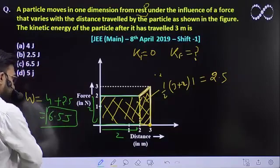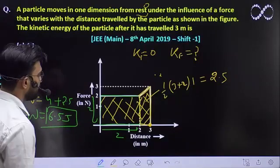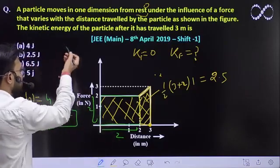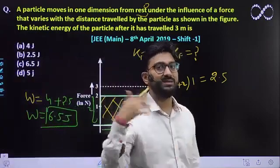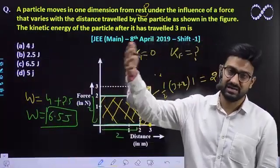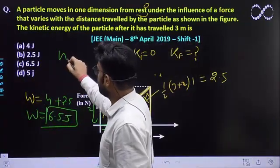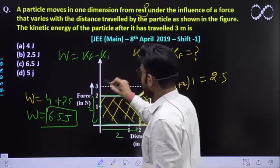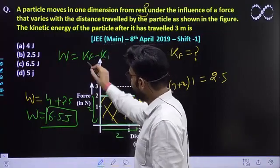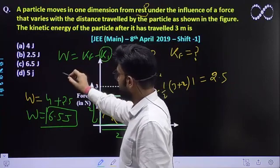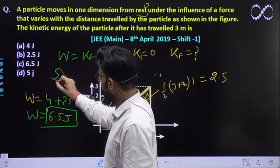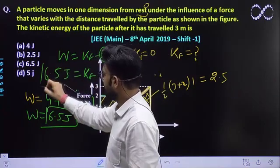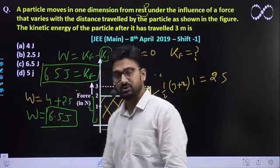Total work done would be 6.5 joules. We already know that whatever work is done equals the increase in kinetic energy. The work-energy theorem says whatever work is done on the object, it would be in the form of increase in its kinetic energy. So this work done must be equal to K final minus K initial. We need to find the final energy. Initial is zero. So this work done of 6.5 joules must equal the final kinetic energy.